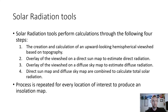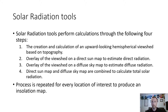Solar radiation tools perform calculations through four steps. Step one: creation and calculation of an upward-looking hemispherical viewshed based on topography. Step two: overlay the viewshed on a direct sun map to estimate direct radiation. Step three: overlay the viewshed on a diffuse sky map to estimate diffuse radiation. Step four: the direct sun map and diffuse sky map are combined to calculate total solar radiation. This process is repeated for every location of interest to produce an insolation map.